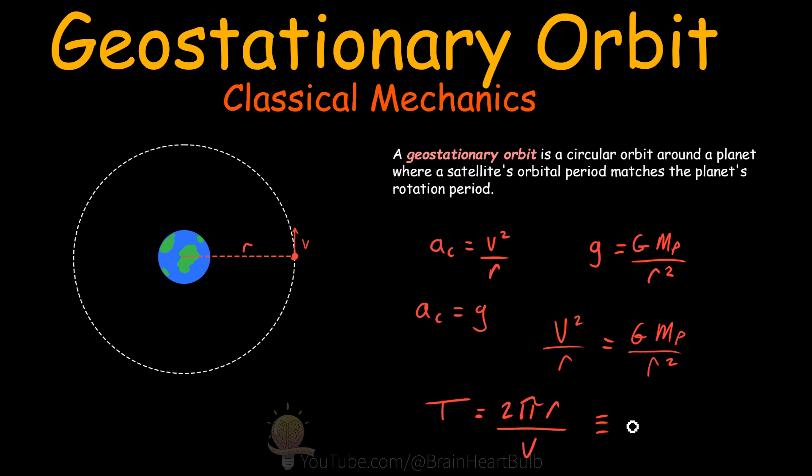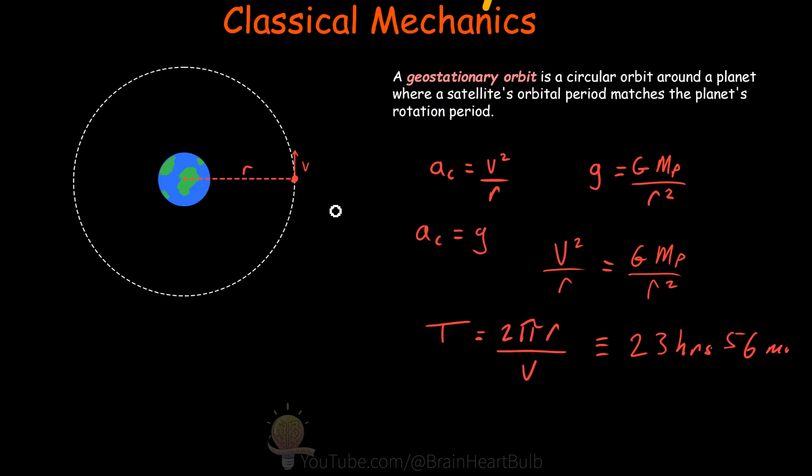And we want to fix this period to the planet's rotational period. So if we're looking at the Earth here, the Earth rotates every 23 hours and roughly 56 minutes. So we have a bit of an issue here. Because we're left with two unknowns, we don't know the velocity required to keep the satellite in perfectly circular orbit, with a period of 23 hours and 56 minutes, and we don't know the exact distance that is required for this planet's mass. So what can we do here?